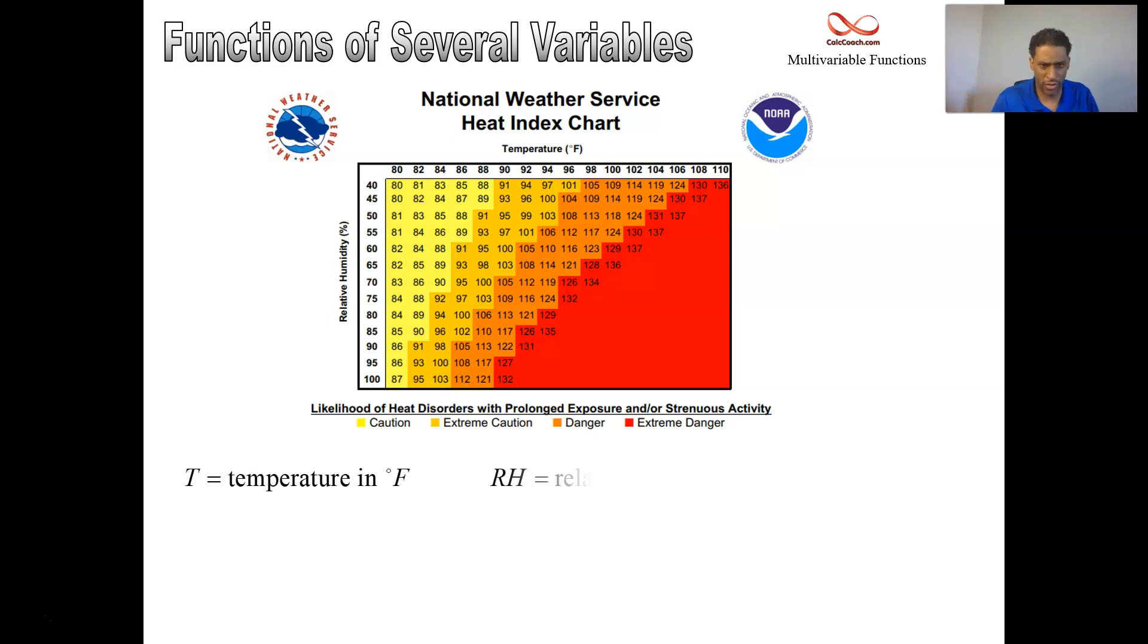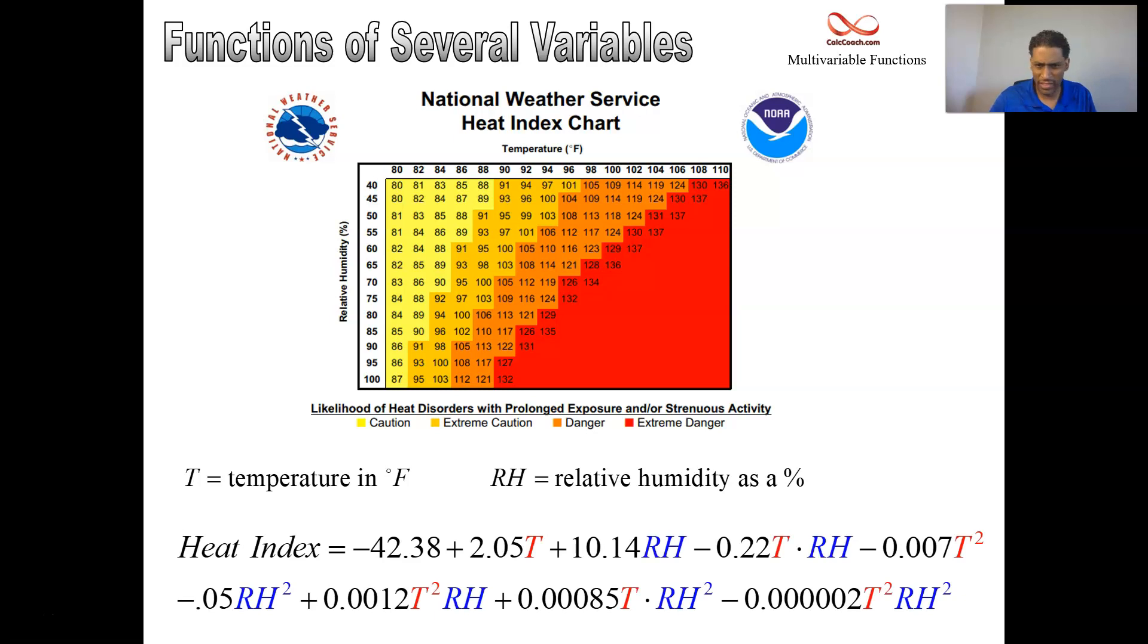Input variable number one is temperature in degrees Fahrenheit. Input variable number two is the relative humidity, entered as a percentage. This is the National Weather Service and the National Oceanic and Atmospheric Administration, NOAA. In real life, you get a bunch of data and you perform a regression.